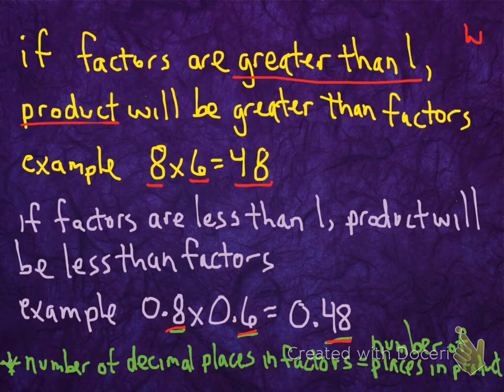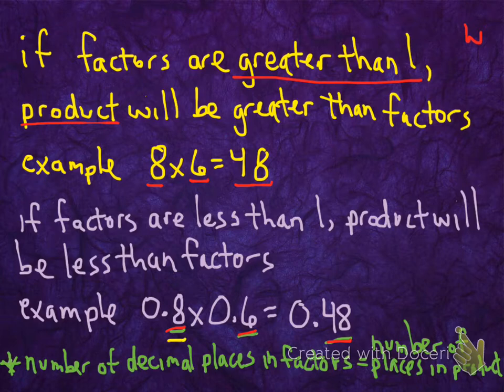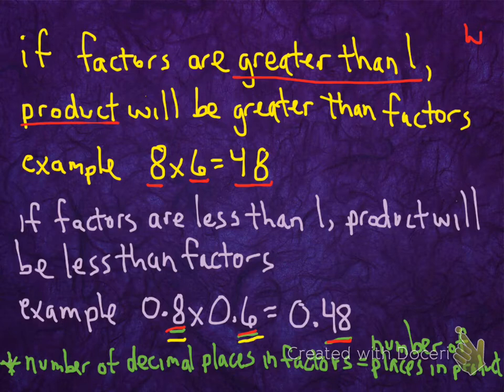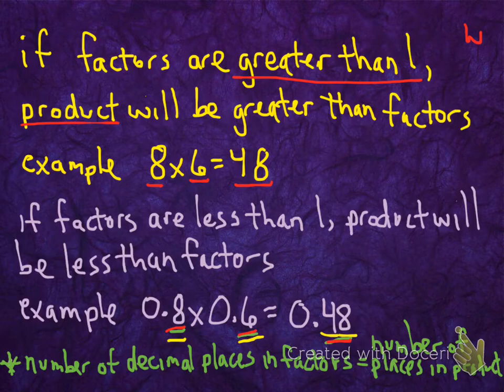We'll talk more about that, but we can see from this one example. There is one decimal place in this factor of 0.8. There is one decimal place in this factor of 0.6. So that's two places altogether. Therefore, our final product must have two places after the decimal point. Okay, let's do more of that.